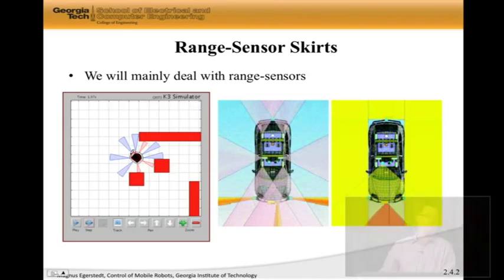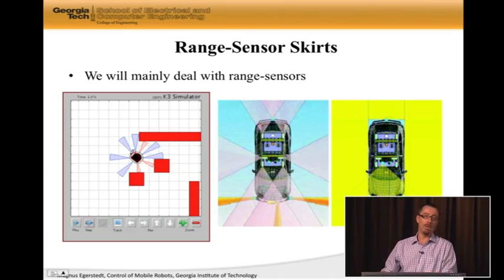Well, you see the cones. You have blue and red cones. And then you have red rectangles. The red rectangles are obstacles. And what we're going to be able to do is measure the direction and distance to obstacles. So this is what type of information we're going to get out of these range sensor skirts.